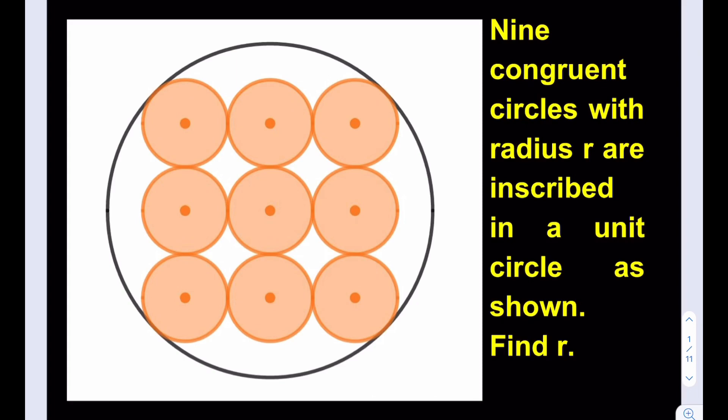I'm going to connect the centers of these two circles here. We can obviously make many connections, but they're all going to be symmetrical, so it doesn't really matter much. I'm going to make that connection first, and then I'll also connect these two centers and then these two centers. That's going to give me a lot of good information.